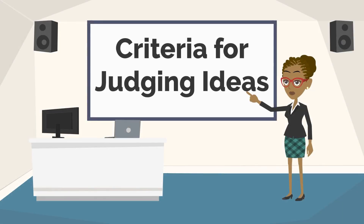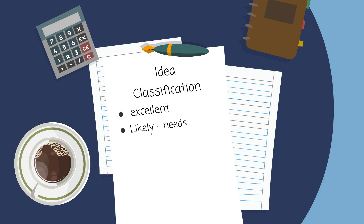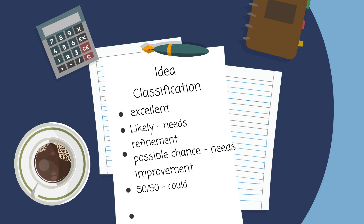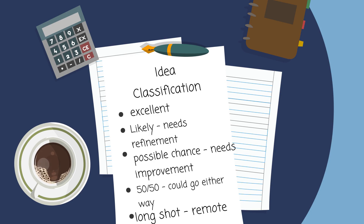Once you've addressed the key questions, you can now develop a simple criteria for critiquing ideas. You can classify your ideas as excellent to a long shot. You may never choose to back a long shot idea or a 50-50 idea. However, if you list and classify them, you have the choice of rejecting or improving them. If you do not list them, you have no choice in the matter at all.